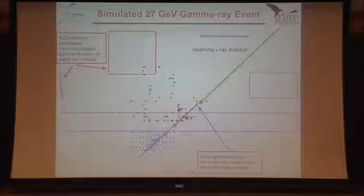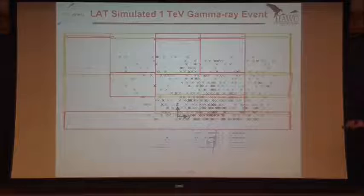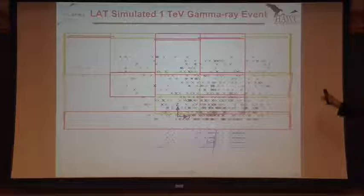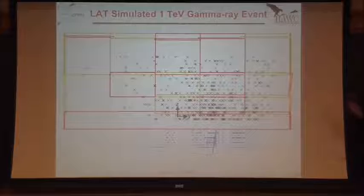Here's a 1 TeV event in comparison. Now we're starting to get saturated — this would be a super hard event to reconstruct. We're losing a lot of the shower that's probably coming out and not being captured. Fermi just isn't big enough at these energies, and we also start to run out of events — there just aren't as many photons. So what do we do? We build a bigger detector.